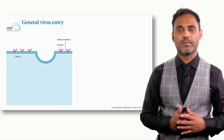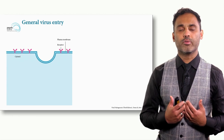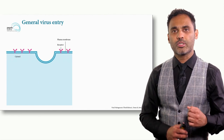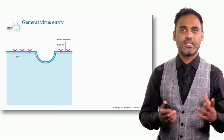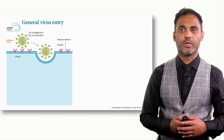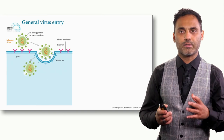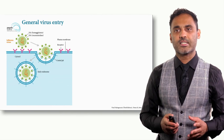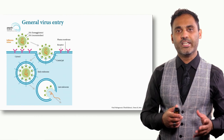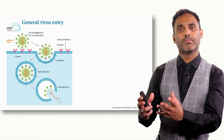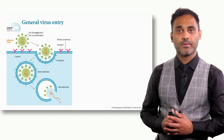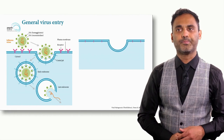If we think about general virus entry, viruses require our own human cell machinery to replicate. Unlike bacteria, viruses are acellular — they hijack host cell machinery to replicate. Taking the influenza virus as an example: it binds to its receptor, forms an endosome — a capsule — that takes it into the cell. Once inside, it releases its RNA genetic material, hijacks the cell machinery to produce many viral copies, then exits through budding after replication.